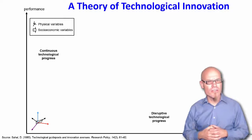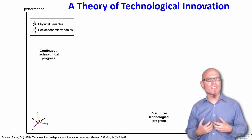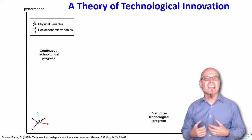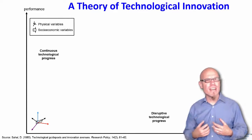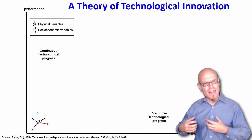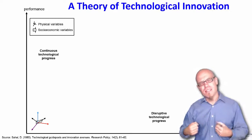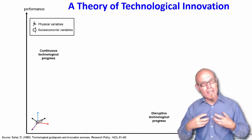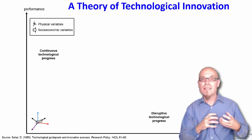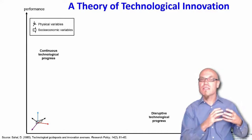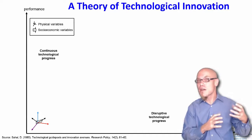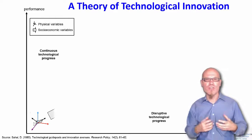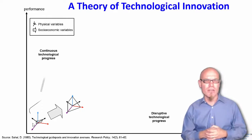One important characteristic of the evolution of technology on the basis of new combinations is that this evolution is characterized by discrete jumps. Sometimes things get continuously better and then suddenly there are these big jumps — really disruptive innovations.